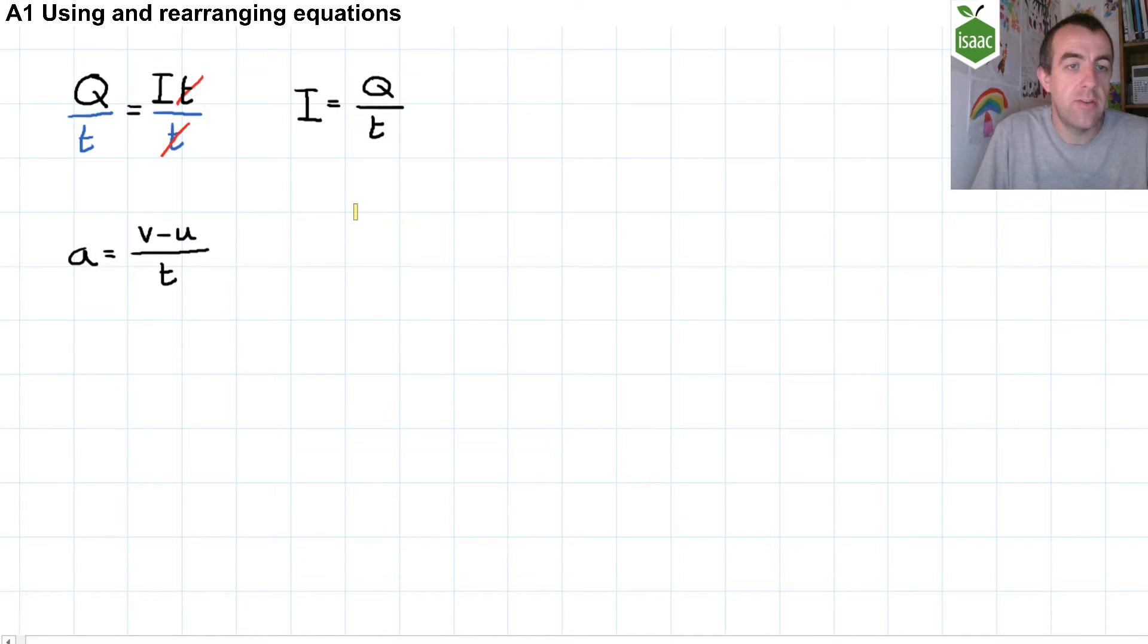Some equations have addition and subtraction, as well as multiplication and division. If we look at this equation, we can see that V minus U all divided by T is A, where A is the acceleration.